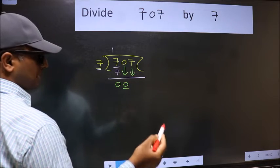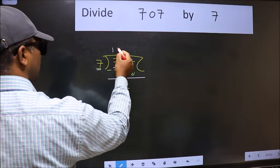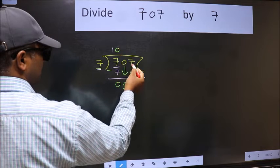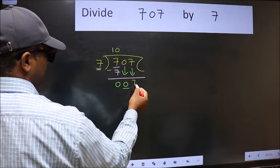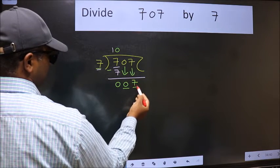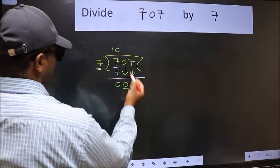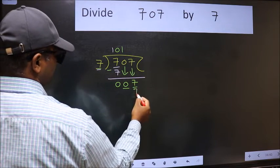The rule to bring down the second number is we should put 0 here. Then only we can bring this number down. Now 7. When do we get 7 in the 7 table? 7 once 7.